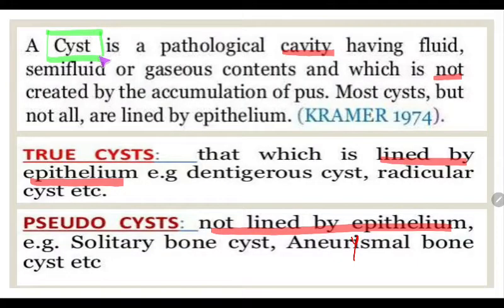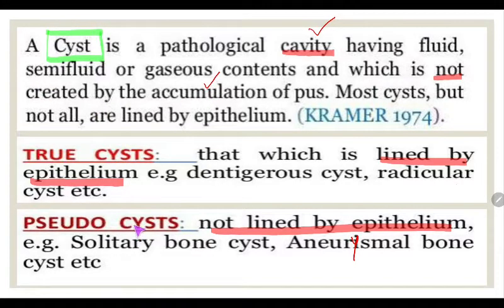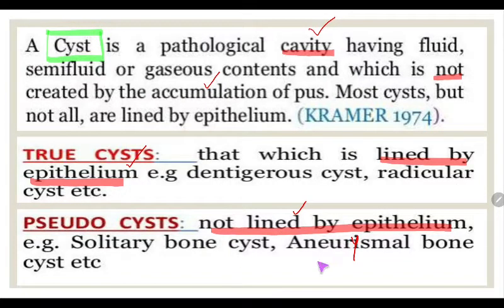A cyst is a pathological cavity that can contain fluid, semi-fluid, or even gas, but it is not created by accumulation of pus. The types of cysts are true cysts and false cysts. In true cysts, the cavity is lined by epithelium. In false cysts or pseudo-cysts, it is not lined by epithelium. Important examples include solitary bone cyst, aneurysmal bone cyst, and pseudo-cyst of the pancreas.